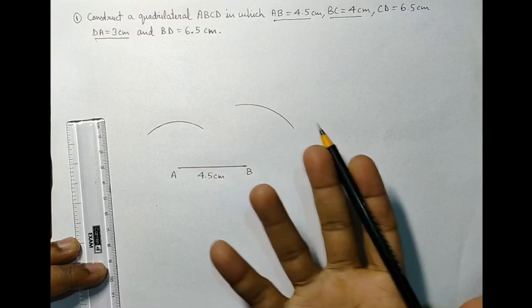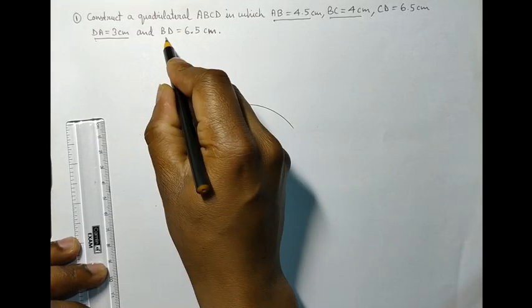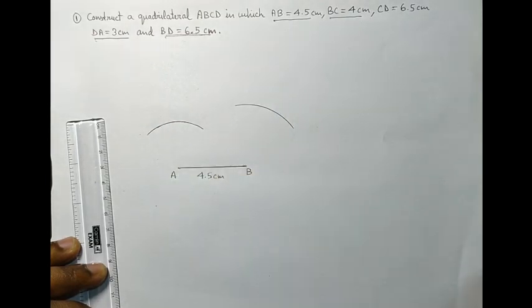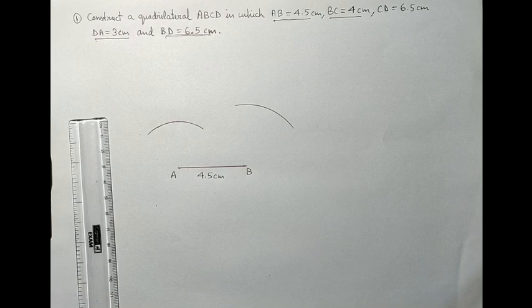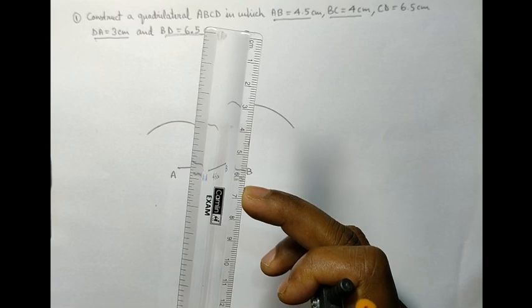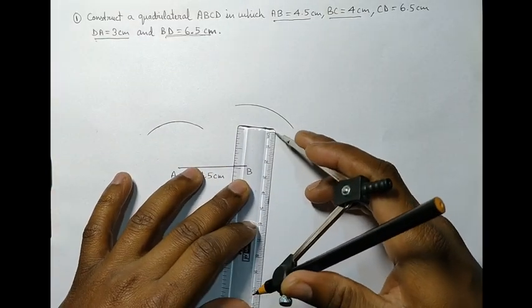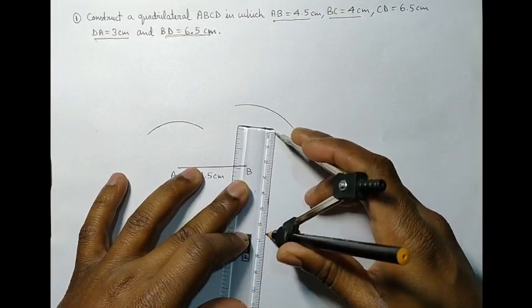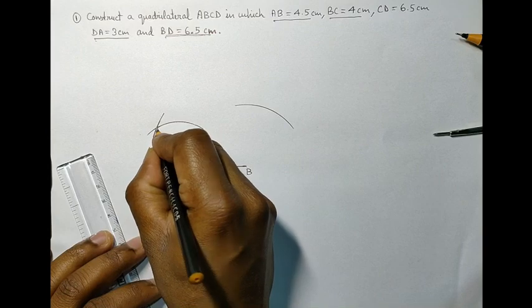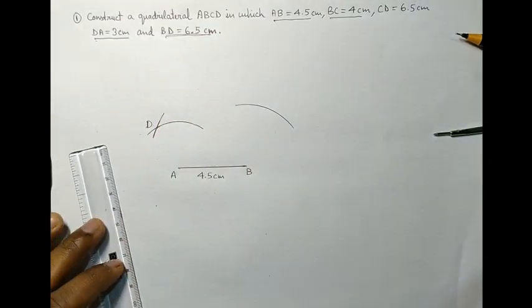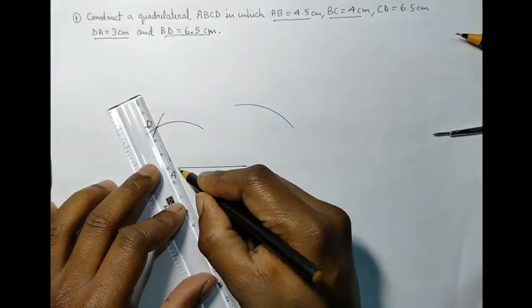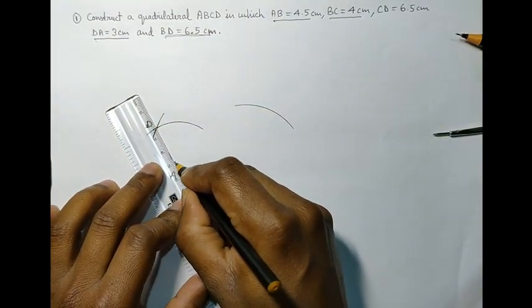But still, we do not know where the point D will lie. Now, we have BD, 6.5 cm, and that is the diagonal of a quadrilateral, so we can take the measurement of 6.5 cm. After taking the measurement, simply cut an arc from the point B to the arc, and that measurement will be 3 cm to the point D.